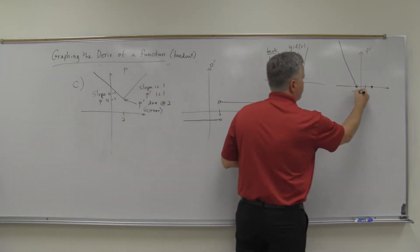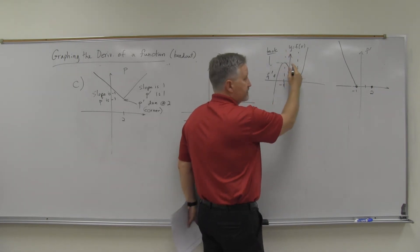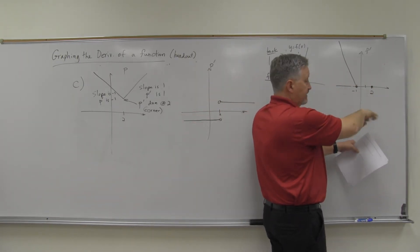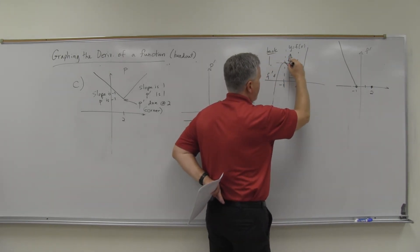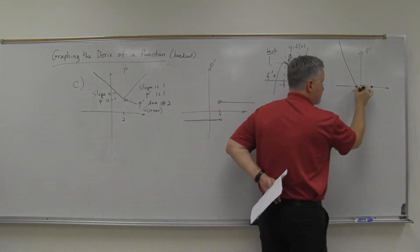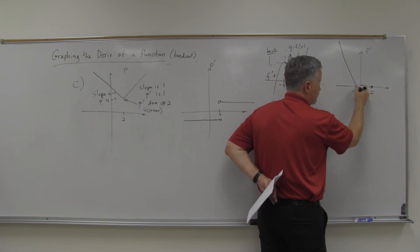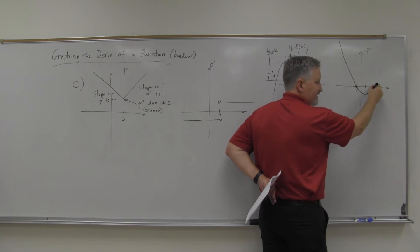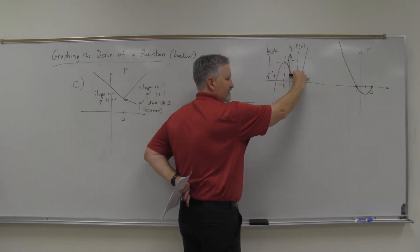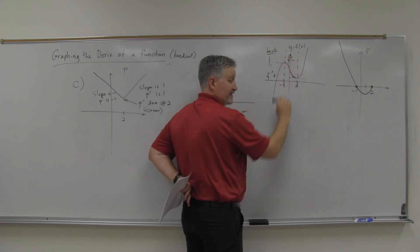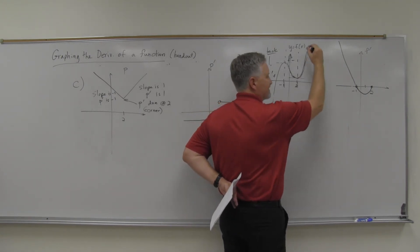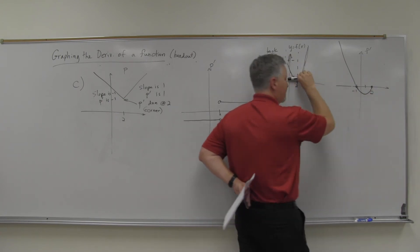Between negative one and two, the slopes are negative, so f prime is negative — below the x-axis. They start small negative just after negative one, get a little bigger and steeper toward the middle, then turn back around coming back to small negatives and eventually zero at x equals two. After x equals two, we're back to positive slopes — positive derivatives. They start small positive and get bigger and bigger positive as we go out.